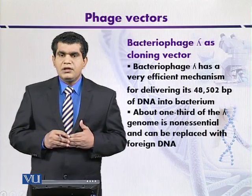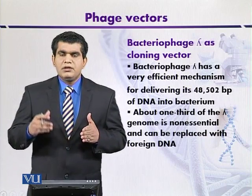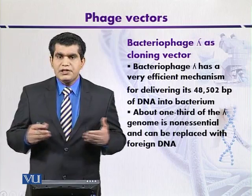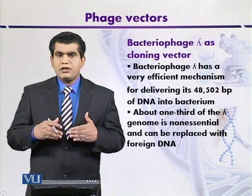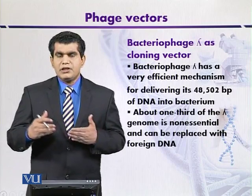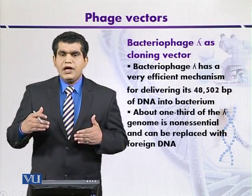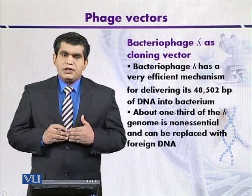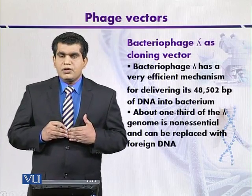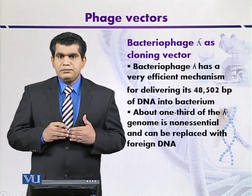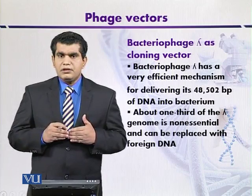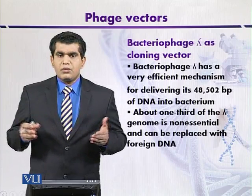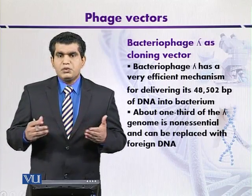Immunity to superinfection means that when lambda phages infect E. coli, there are two possibilities: they may be virulent phages that cause cell lysis immediately, or in some cases they may be temperate and enter a lysogenic phase, where the lambda phage genome integrates with the host genome and replicates with it. If a prophage is already present, infection by another phage particle is prevented — this is called immunity to superinfection.